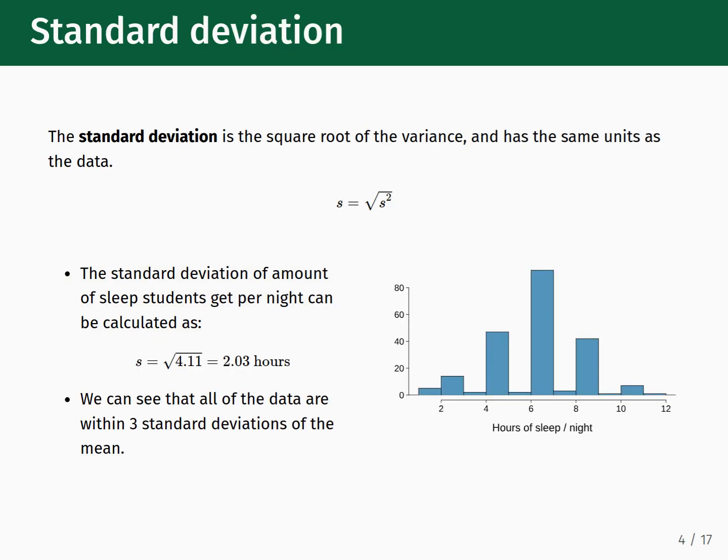One issue with using the variance to discuss the spread of a distribution is that its units are not intuitive. In our example, how do we interpret hours squared? It's not immediately obvious. For this reason, it's much more common to use the statistical measure known as the standard deviation when discussing the spread of a data distribution. It's easy to compute once you've found the variance, as you just take its square root. This gives us a quantity that is in the same units as the data. So, for our example, the standard deviation of the amount of sleep that students get per night is 2.03 hours. If we compare this value to the histogram plotted on the right, we can see that all of the data fall within three standard deviations of the mean. For symmetric bell-shaped distributions like the one shown here, this is a convenient rule. Nearly all of the data will fall within three standard deviations either above or below the mean value.